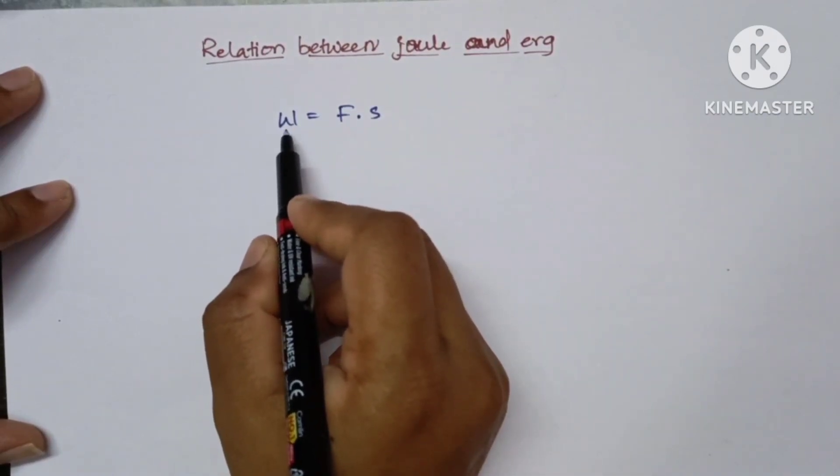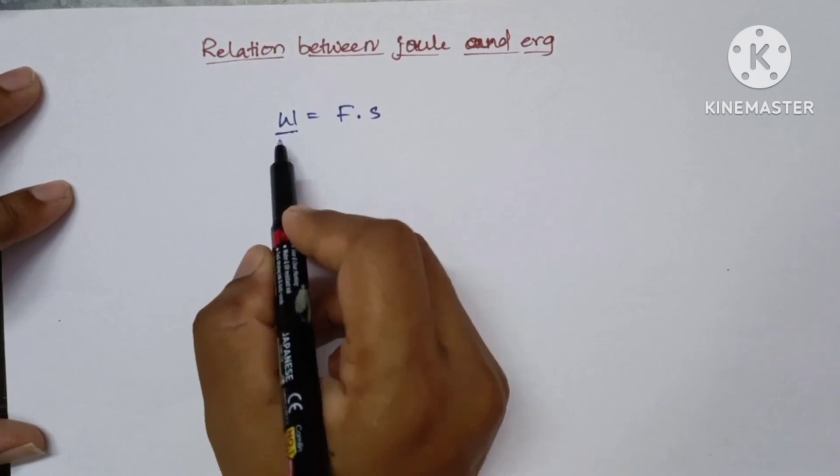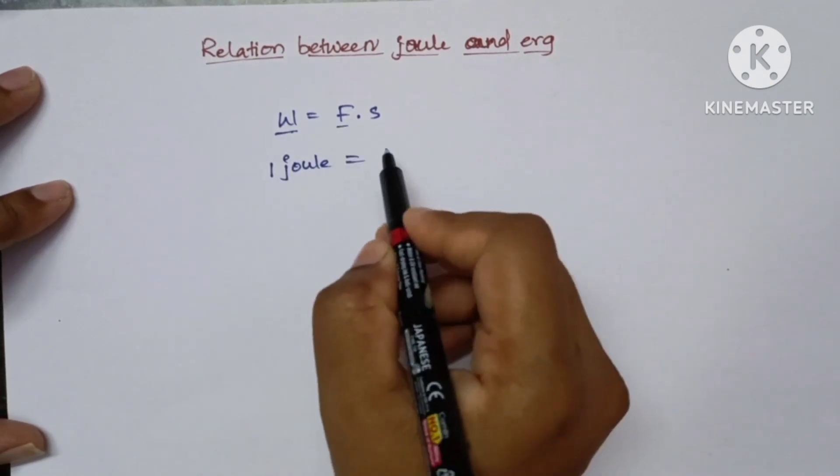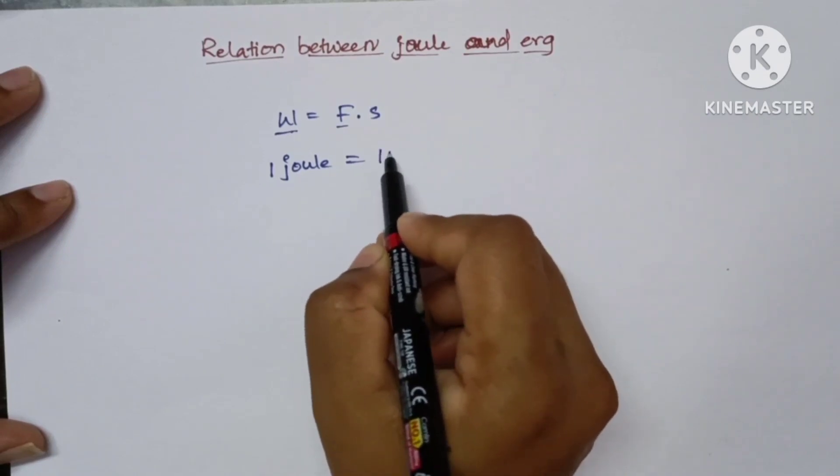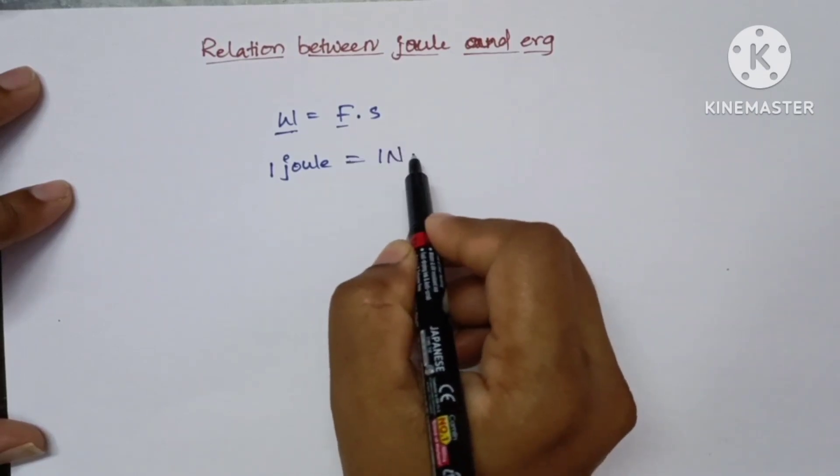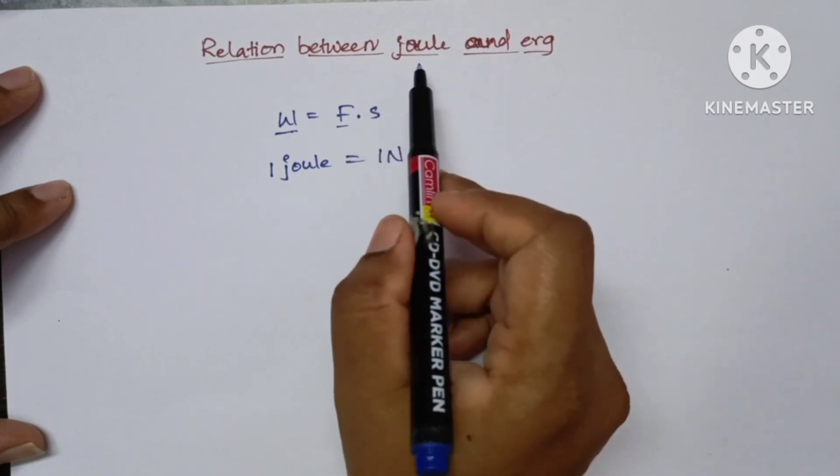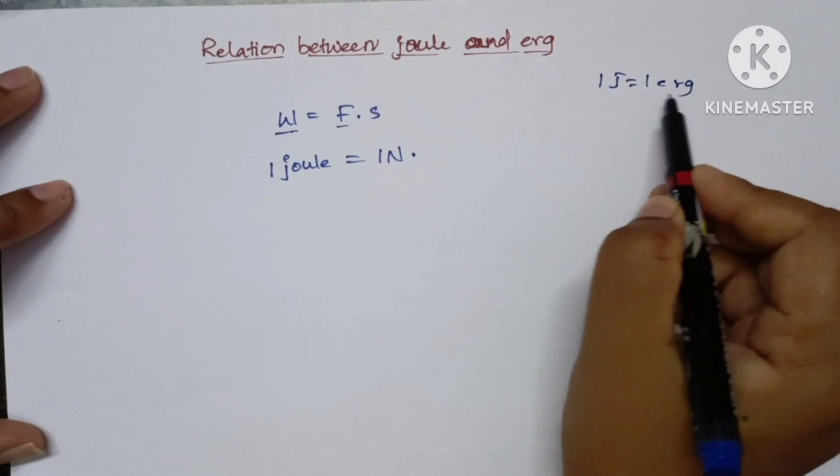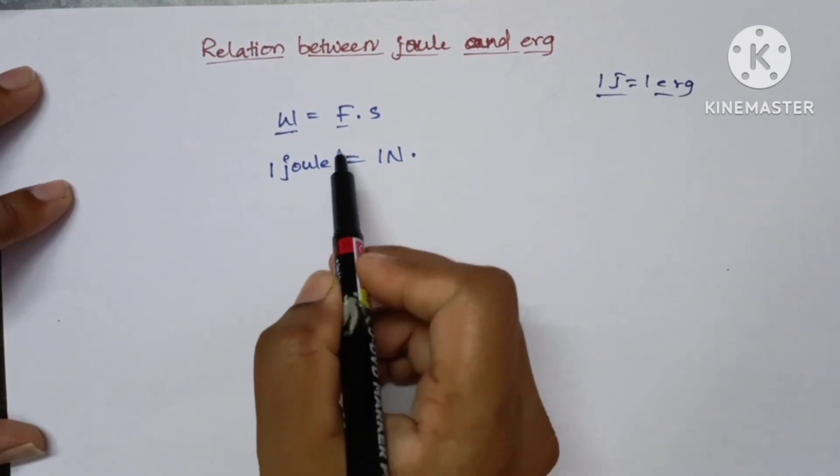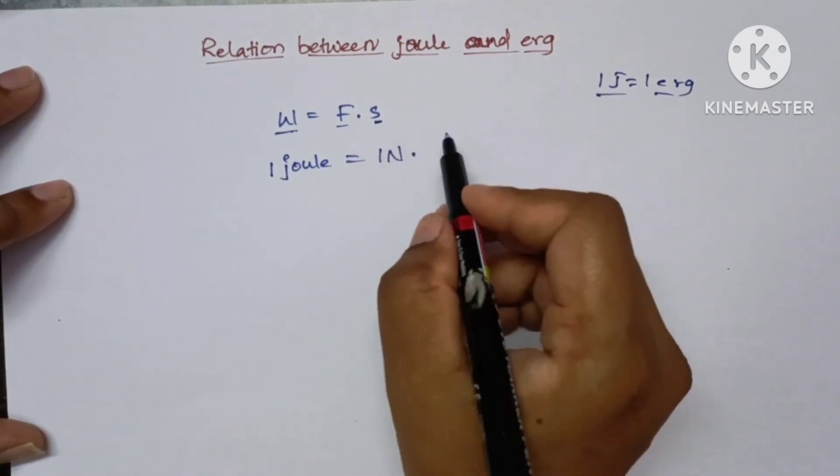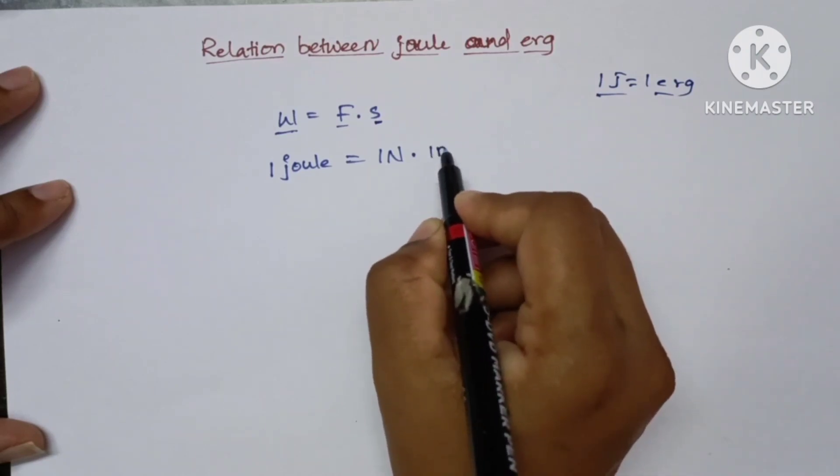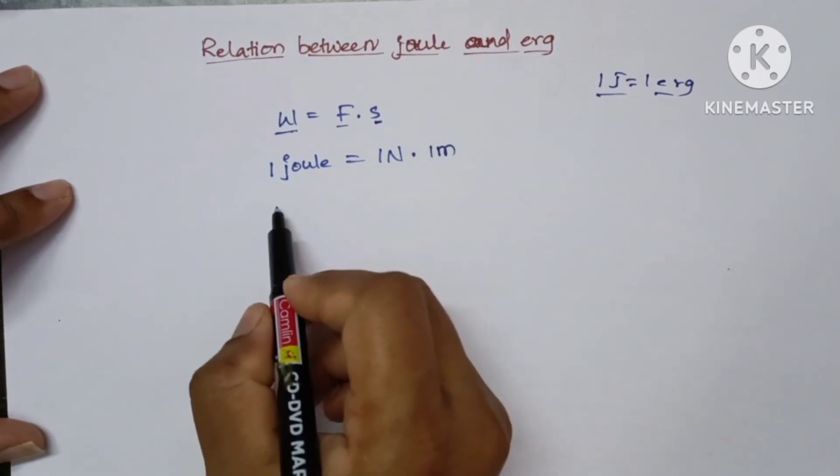So the SI unit of work is joule. 1 joule is equal to—write the SI unit for force—1 newton. I'm writing as 1 newton. To get the relation between 1 joule and 1 erg, I'm considering 1 joule and the SI unit of displacement is meter, just writing as 1 meter.